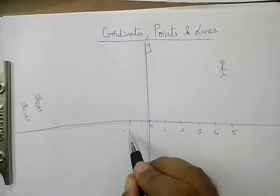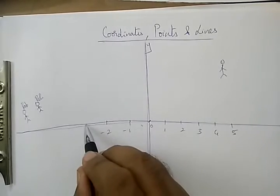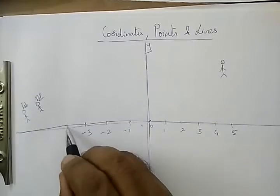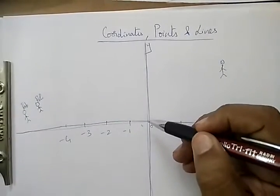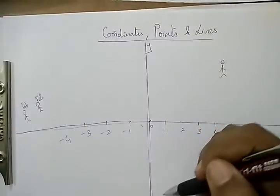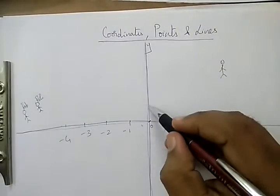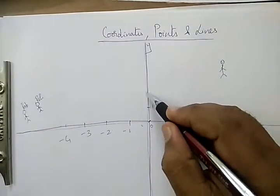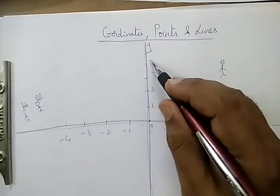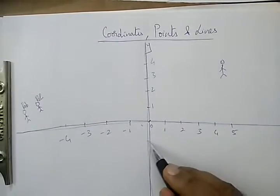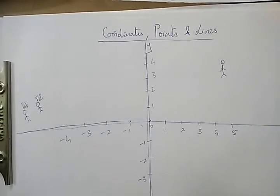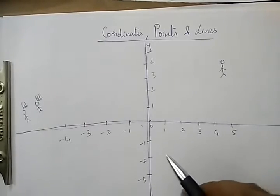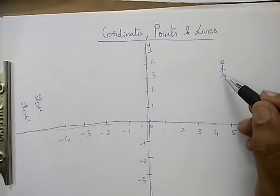All the points on the left side of zero: minus one, minus two, minus three, minus four. And in the y, or the vertical one, let's make it positive on top: one, two, three, four. And down: minus one, minus two, minus three.